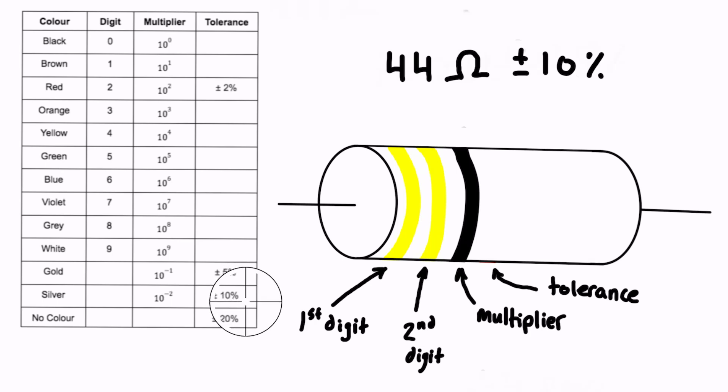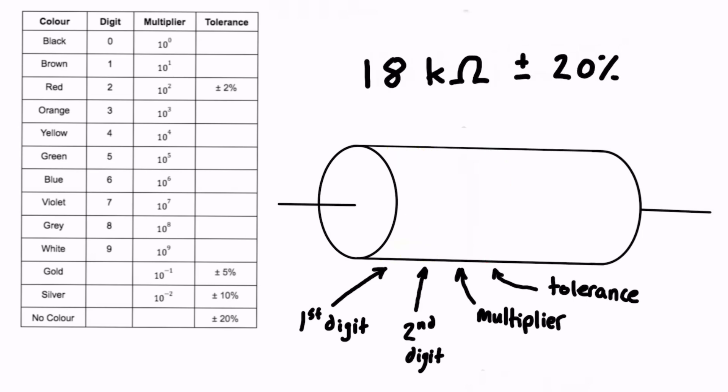For tolerance, plus or minus 10% corresponds to the silver color. Hopefully silver shows up properly on your screen — it can be hit or miss with these colors. If you're writing this on an exam or drawing it, you can just write the word 'silver' if there's any doubt about indicating the color.